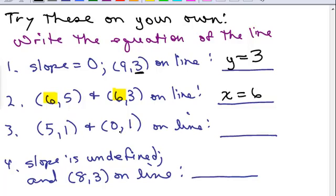Next one. (5, 1) and (0, 1) are on the line. This time, the y-coordinate is the same for both of them. So, y has to always be that number, y = 1.